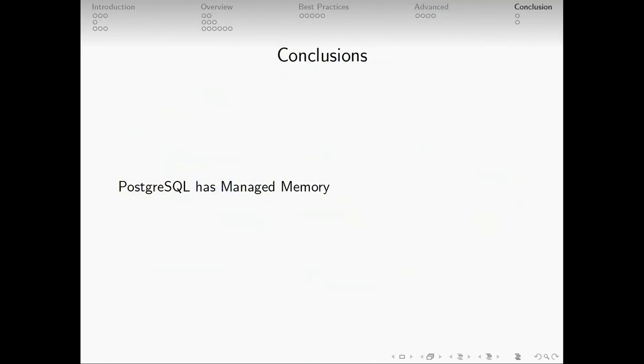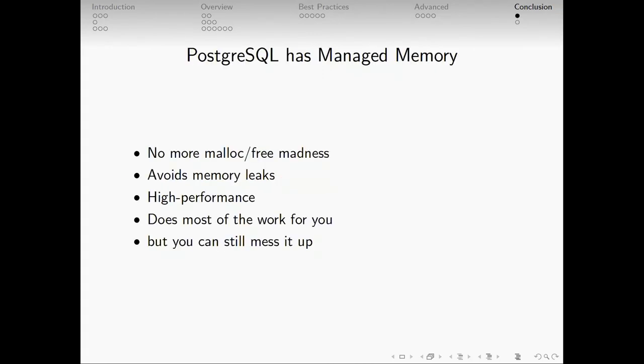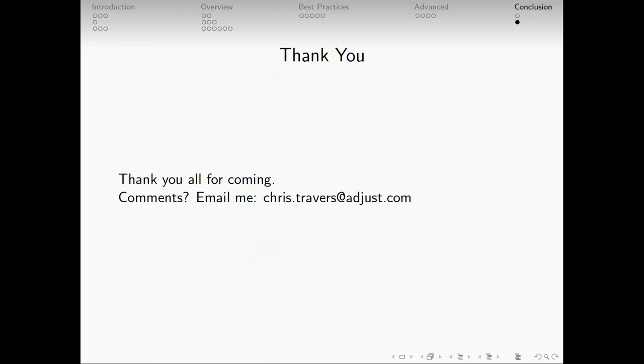So Postgres has managed memory. It's actually really useful. The memory management here is highly performant. It's highly optimized. And once you kind of get used to working with it, you can avoid a lot of big problems that would otherwise be a fairly large burden on your ability to deliver quality, robust code that you can trust to run inside your database system. So high performance. And this really does most of the work for you. But if you're not careful, you can mess it up. Again, enable C assert prevents almost all of the worst problems. Not all of them, but most of them. So thank you. Any comments? Any questions?